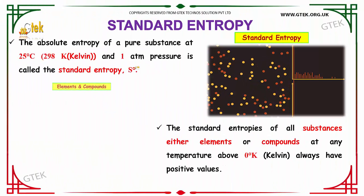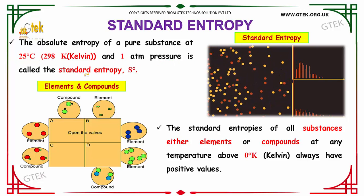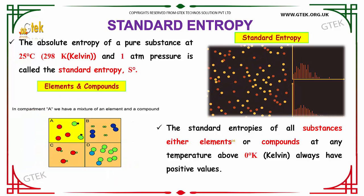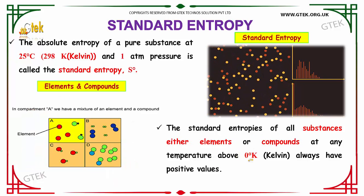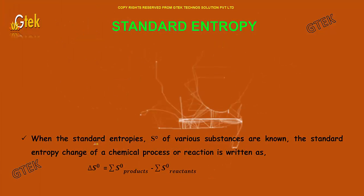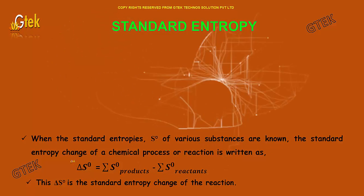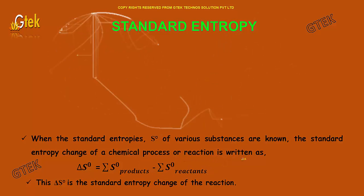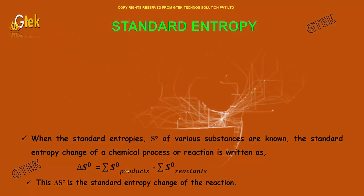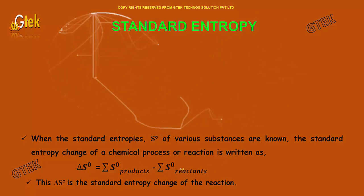The absolute entropy of a pure substance at 25 degrees Celsius and one atmospheric pressure is called the standard entropy. The standard entropies of all substances, either elements or compounds, at any temperature above zero degrees Kelvin always have positive values. Delta S degree is the standard entropy change of the reaction, calculated as: Delta S degree equals the summation of S degree of products minus the summation of S degree of reactants.